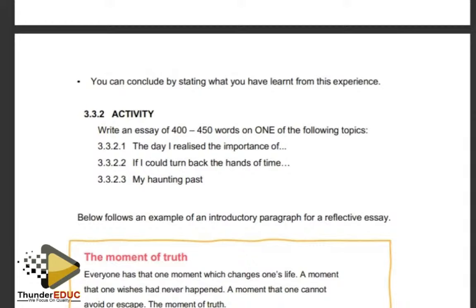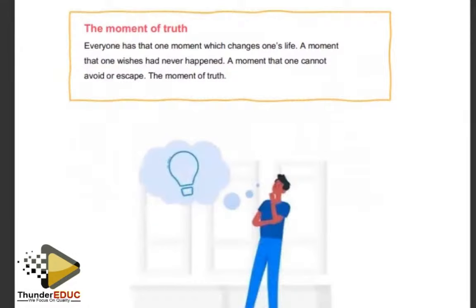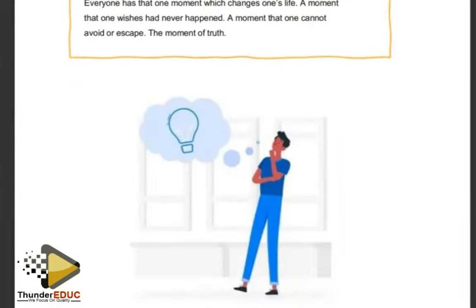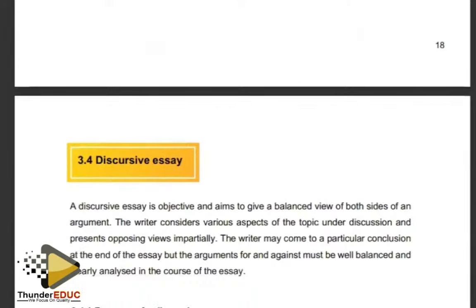Topic examples include: 'The Day I Realized the Importance of Family,' 'The Day I Realized the Importance of a Matric Certificate,' 'The Day I Realized the Importance of Self-Discipline,' and 'If I Could Turn Back the Hands of Time.' Here is an example of an introductory paragraph for a reflective essay titled 'The Moment of Truth': 'Everyone has that one moment which changes one's life. A moment that one wishes had never happened. A moment that one cannot avoid or escape. That is the moment of truth.' You've included everyone — no one can escape or avoid it.